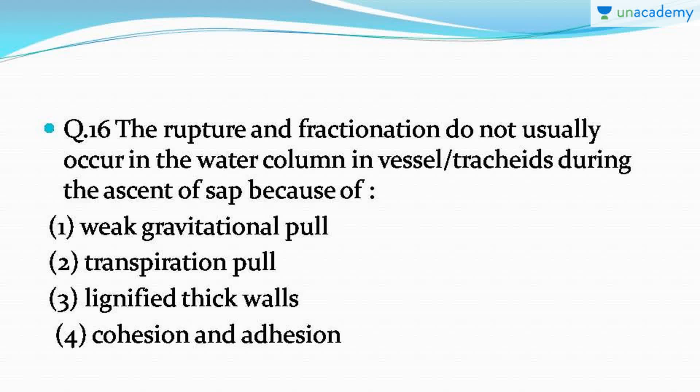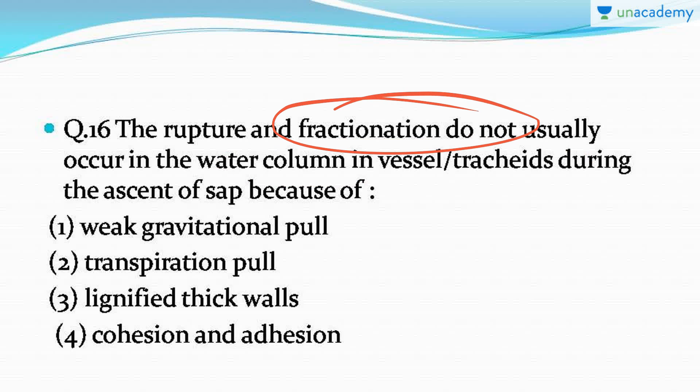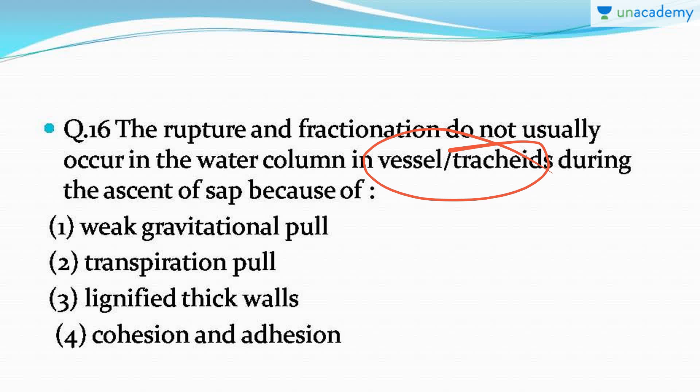Moving forward to the next question: the rupture and fractionation do not usually occur in the water column in vessels and tracheids during the ascent of sap because of — basically, what has been asked is why the water column formed within the vessel or tracheid is not ruptured. It's a very easy question, just try to answer it.